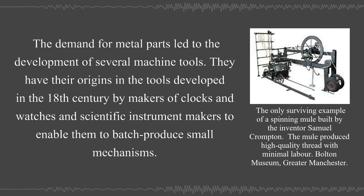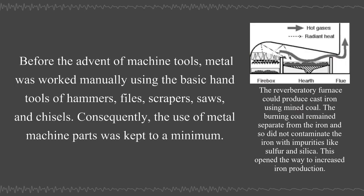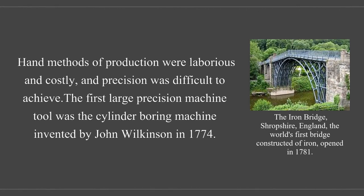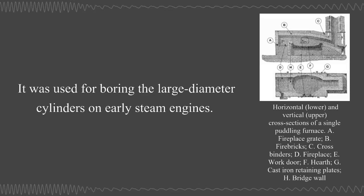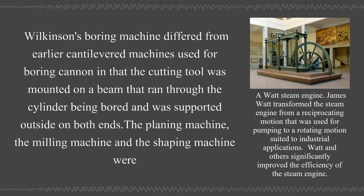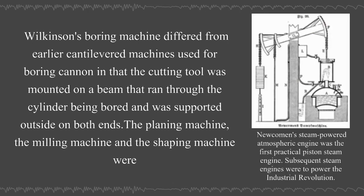Machine tools have their origins in the tools developed in the 18th century by makers of clocks and watches and scientific instrument makers. Before the advent of machine tools, metal was worked manually using the basic hand tools of hammers, files, scrapers, saws, and chisels, keeping the use of metal machine parts to a minimum. Hand methods of production were laborious and costly, and precision was difficult to achieve. The first large precision machine tool was the cylinder boring machine invented by John Wilkinson in 1774, used for boring the large diameter cylinders on early steam engines. Wilkinson's boring machine differed from earlier cantilevered machines in that the cutting tool was mounted on a beam that ran through the cylinder and was supported outside on both ends.